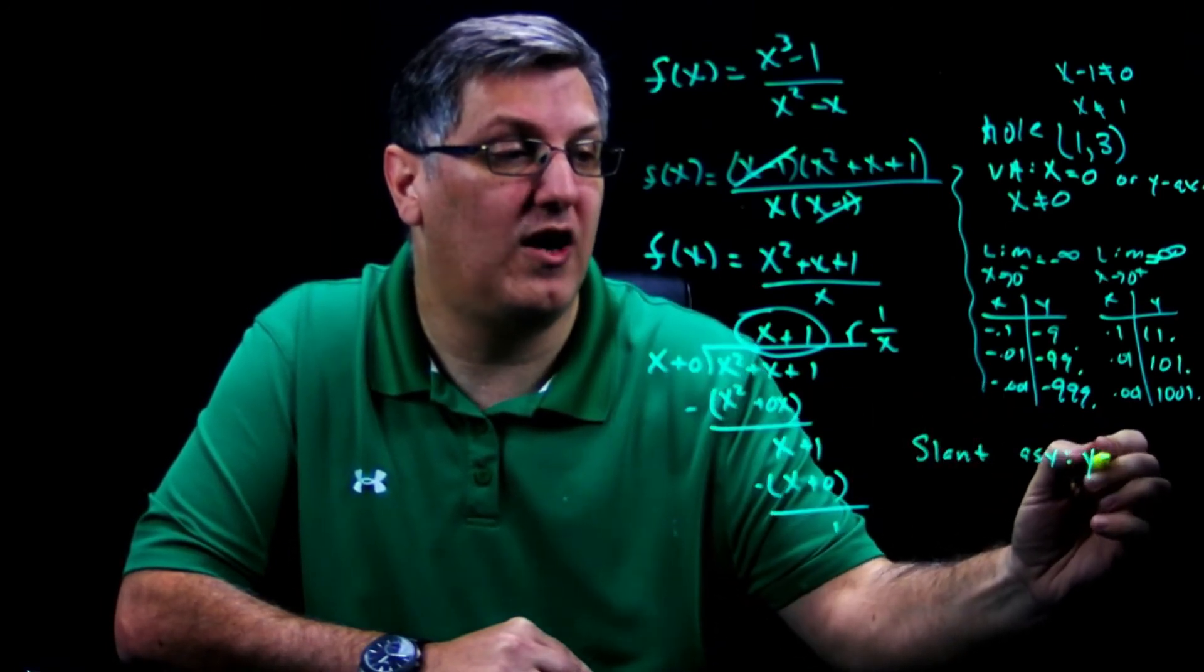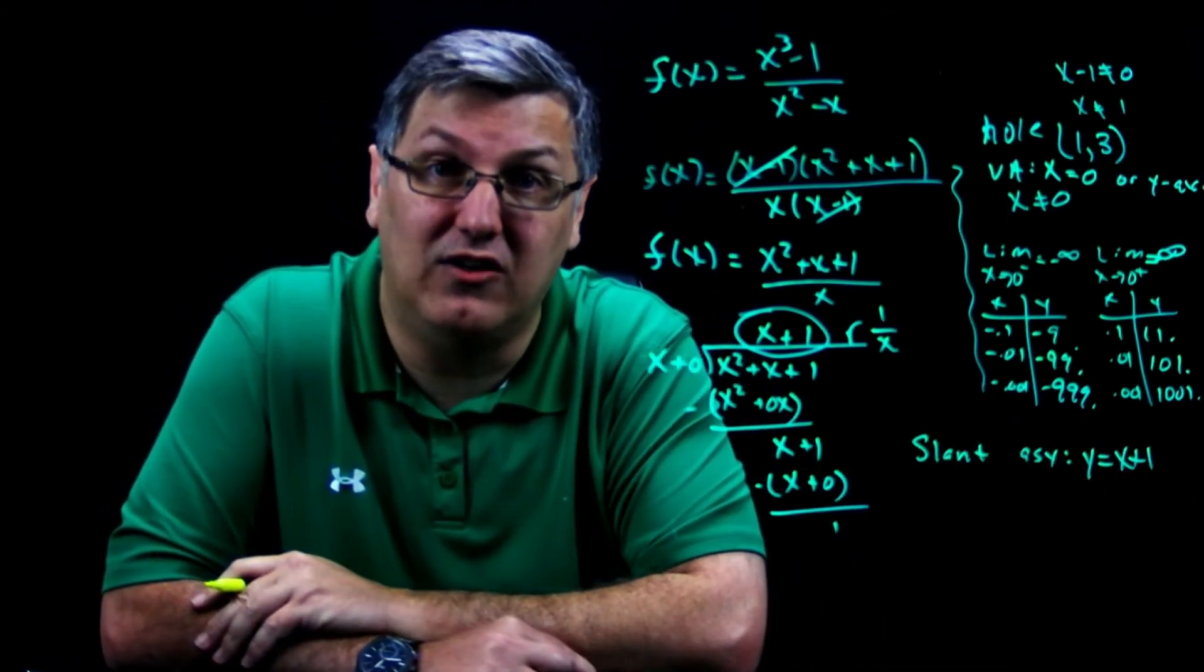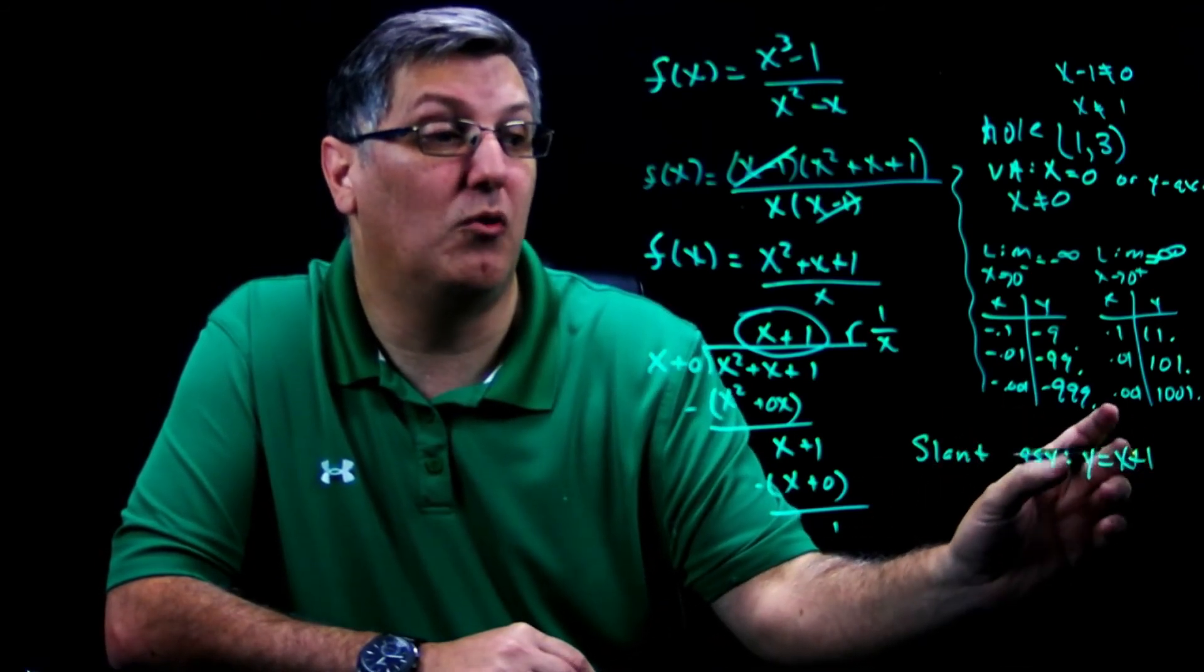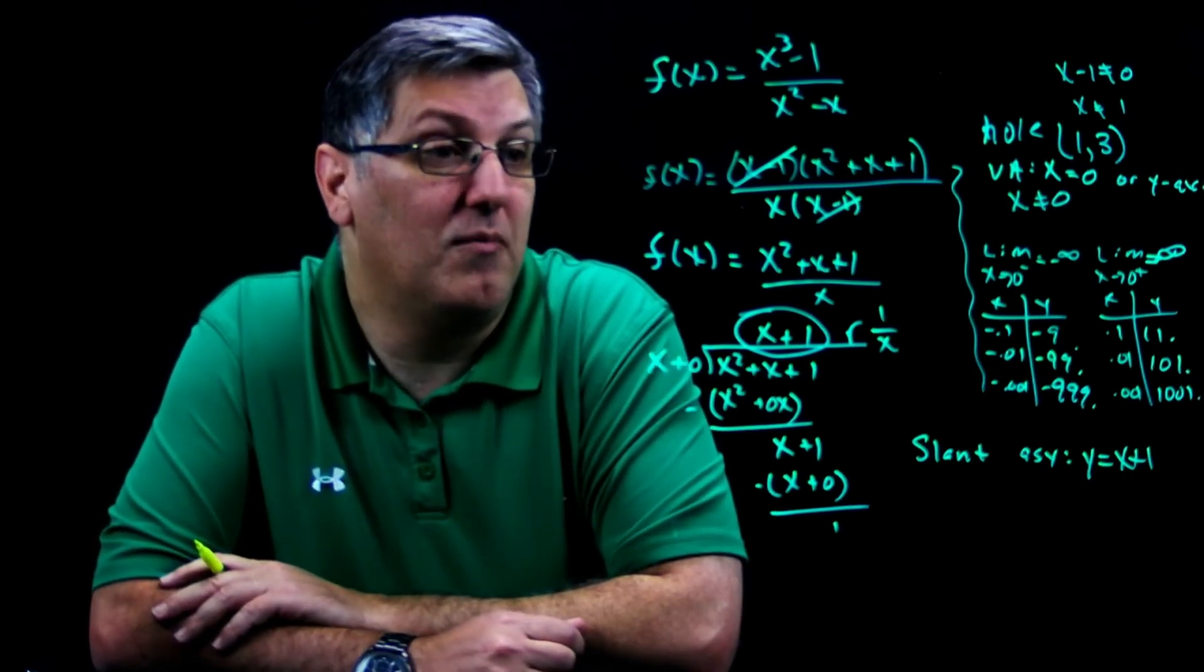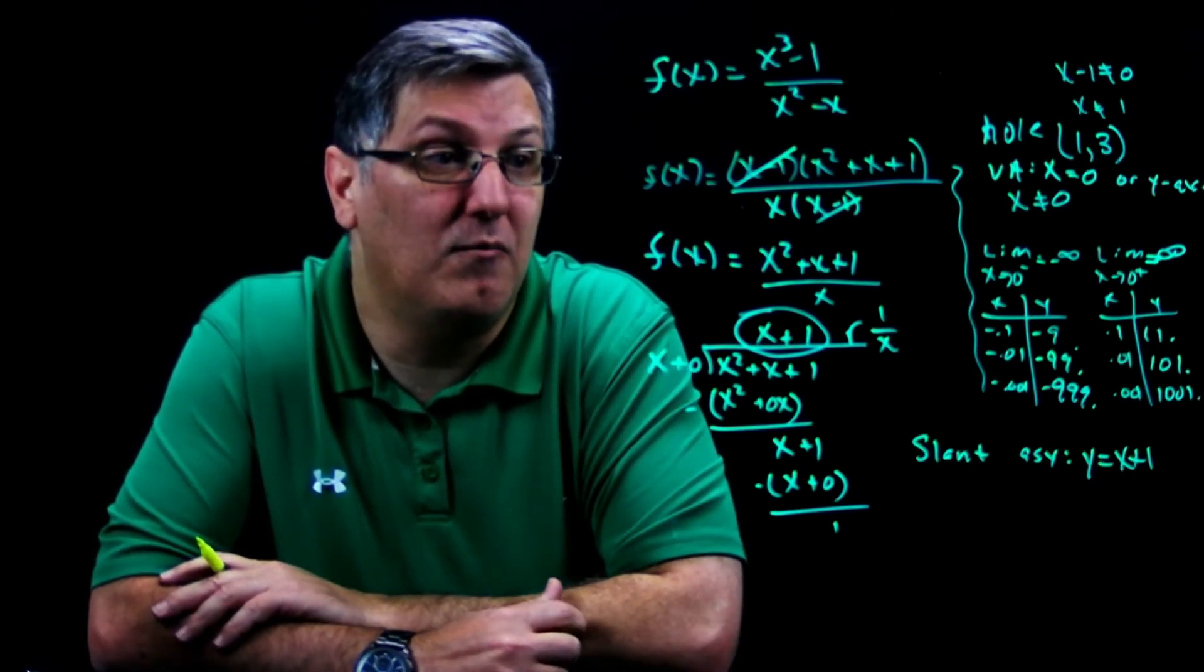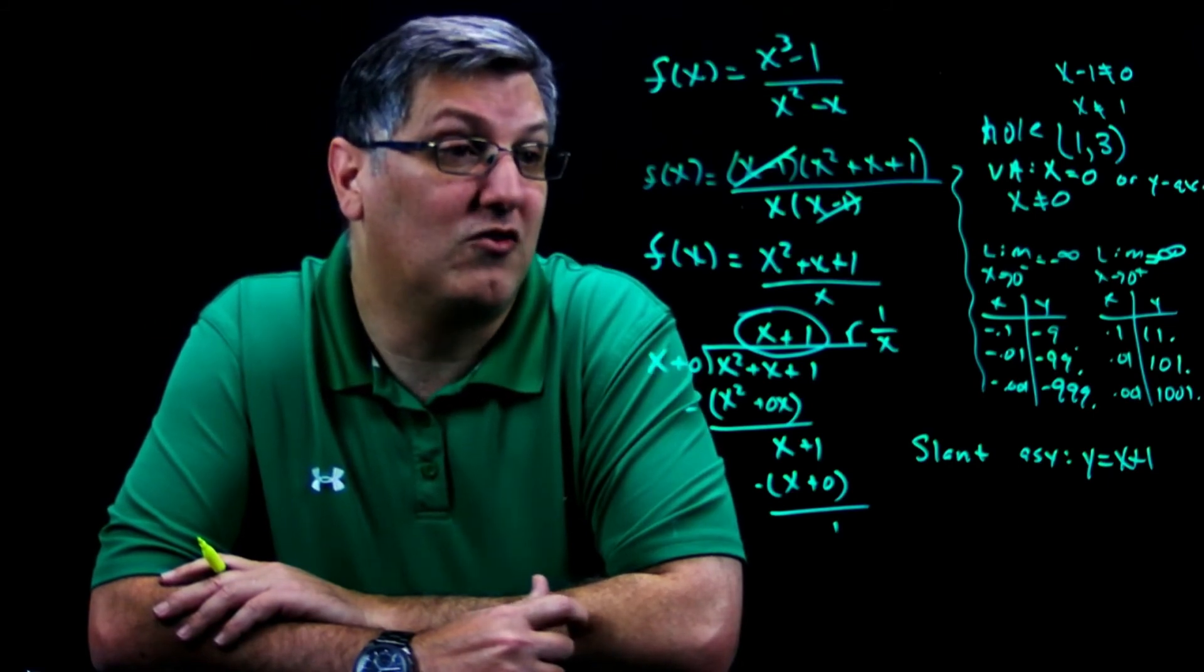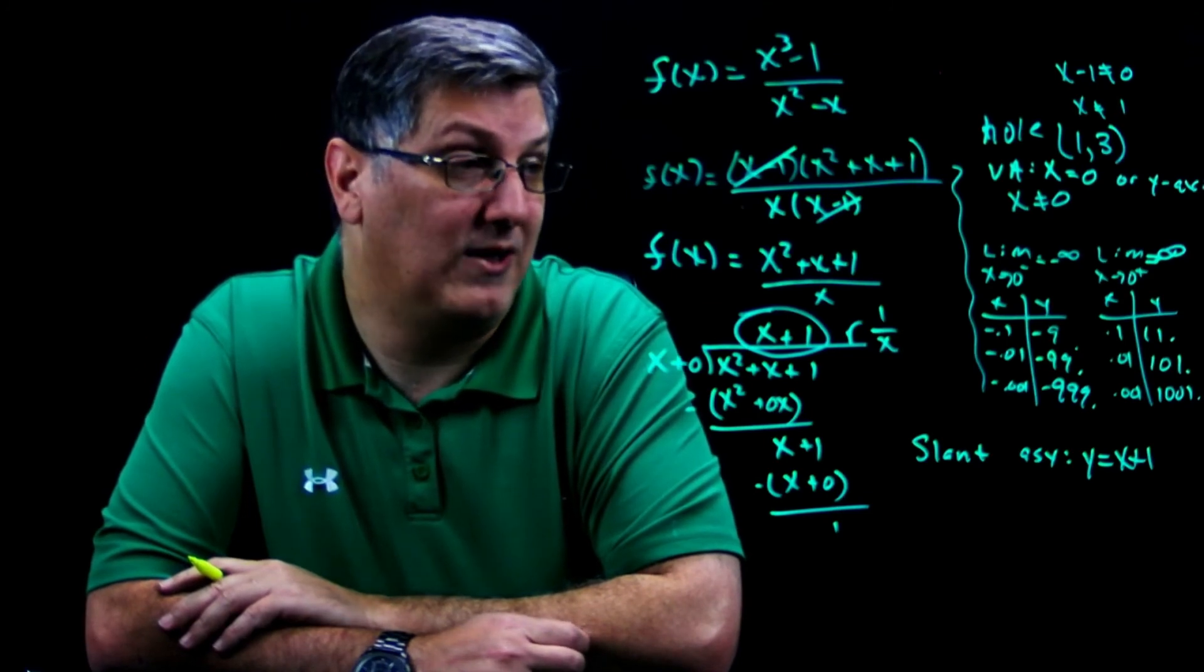So my slant asymptote is y equals x plus one, and we're getting closer to be able to graph this. Now I'm not going to go into detail on how to find what's really going on with limit notations here. I'm going to leave that for calculus, because there is a method, but that's way above and beyond what we need to do in pre-calc. But I can tell you what's going on just by looking at this, because that calculus is not hard, but we're not going to do it in pre-calc.